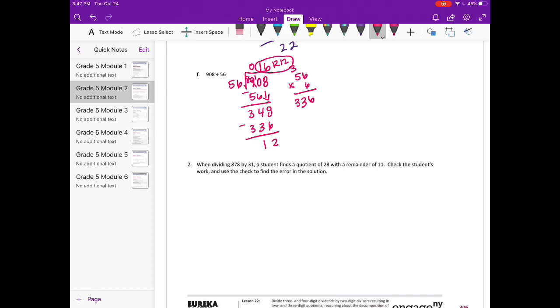And to check would be 16 times 56. And that is 896. And 896 plus 12 is 908. And that works.